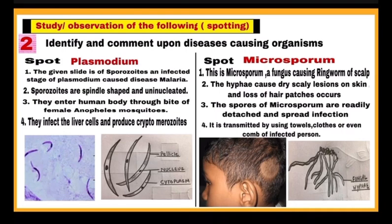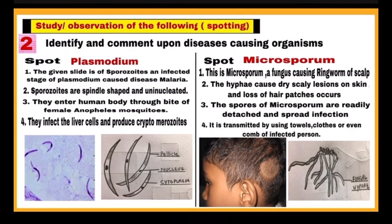Second category of spots are from disease-causing organisms. First spot is Plasmodium — its slide will be shown to you. After identifying the slide, write: point one, the given slide is of sporozoites, an infective stage of Plasmodium which causes the disease malaria. Point two: sporozoites are spindle-shaped with one nucleus, i.e., they are uninucleated. Point three: they enter the human body by the bite of female Anopheles mosquito, which is a vector of the disease. Point four: these sporozoites infect our liver cells and produce cryptomerozoites. After writing these four points, draw the diagram with pencil and label the important parts.